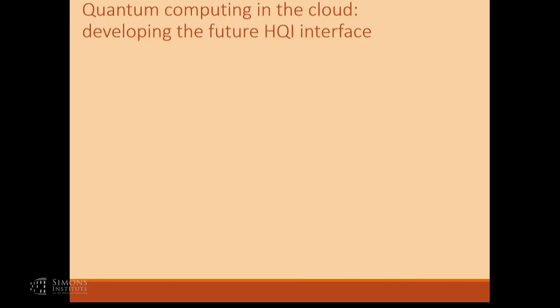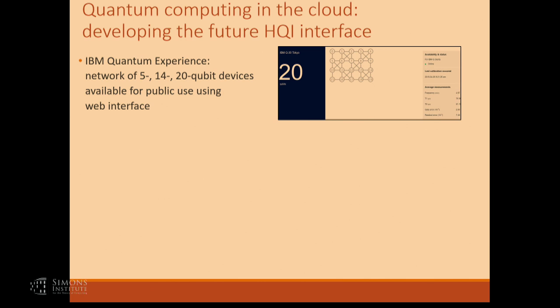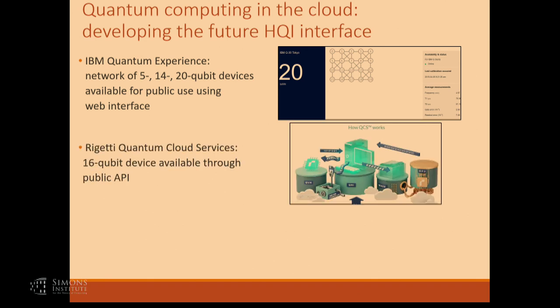I'm going to talk about that question on a fairly theoretical level, but I want to emphasize that it's also a very concrete question — almost a technological problem. There are a number of companies, such as IBM, that are already putting their quantum computers on the cloud. IBM has quantum computers that you can directly compute with through their website. Rigetti is a startup based in the Bay Area that also has a quantum computer available through APIs you can sign up for on their website.